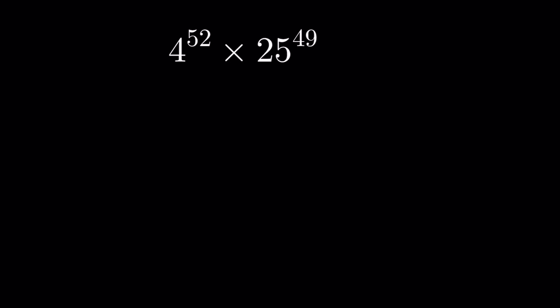4 to the power 52 times 25 to the power 49 — how to solve this? So let's first expand it. We can write 4 to the power 52 as 4 to the power 49 plus 3, since 49 plus 3 is 52.